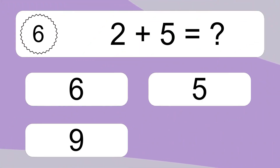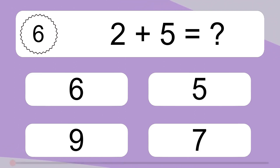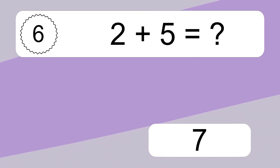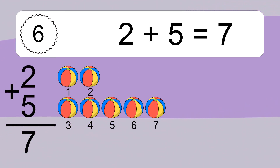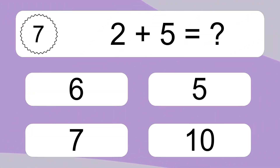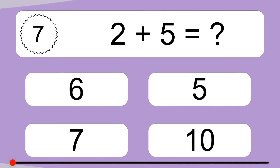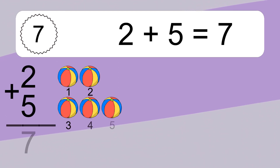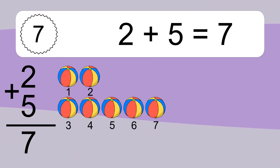2 plus 5 equals what? 2 plus 5 equals 7. Let's count it: 1, 2, 3, 4, 5, 6, 7.